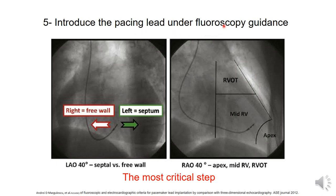The preferred guidance method is fluoroscopic guidance. In the left anterior oblique 40-degree view, this view is important to differentiate between the RV apical septum direction and the RV free wall direction. The appropriate target is the septum. We aim to position the pacing lead toward the septum, avoiding the RV free wall, which is very thin and prone to complications like lead perforation.